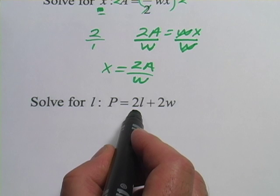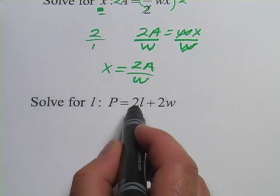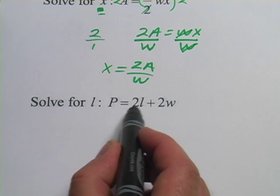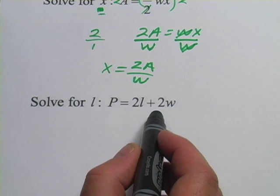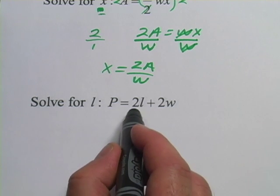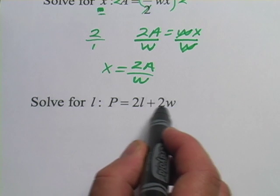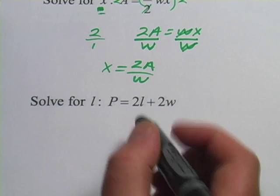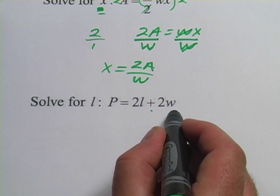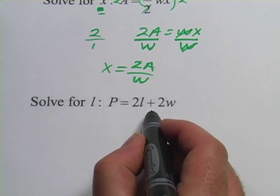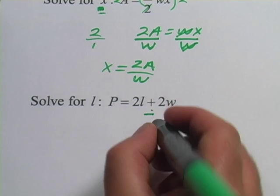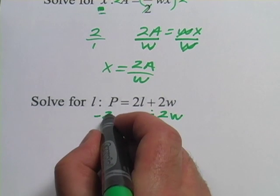And it says solve for L. Well, we've got two different things going on here. L is multiplied by a 2, but there's also this extra term. And before we get rid of that multiplication by dividing, we have to get rid of this extra term first. This term is a plus 2W. So I'm going to do the opposite of plus. I'm going to subtract 2W. I have to do it to both sides.